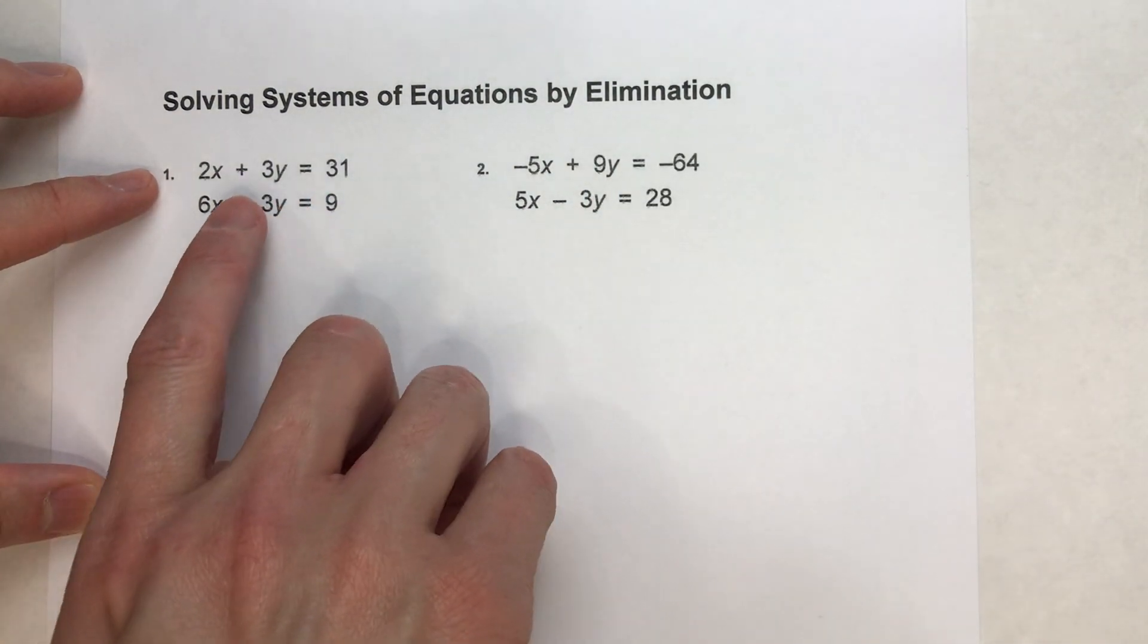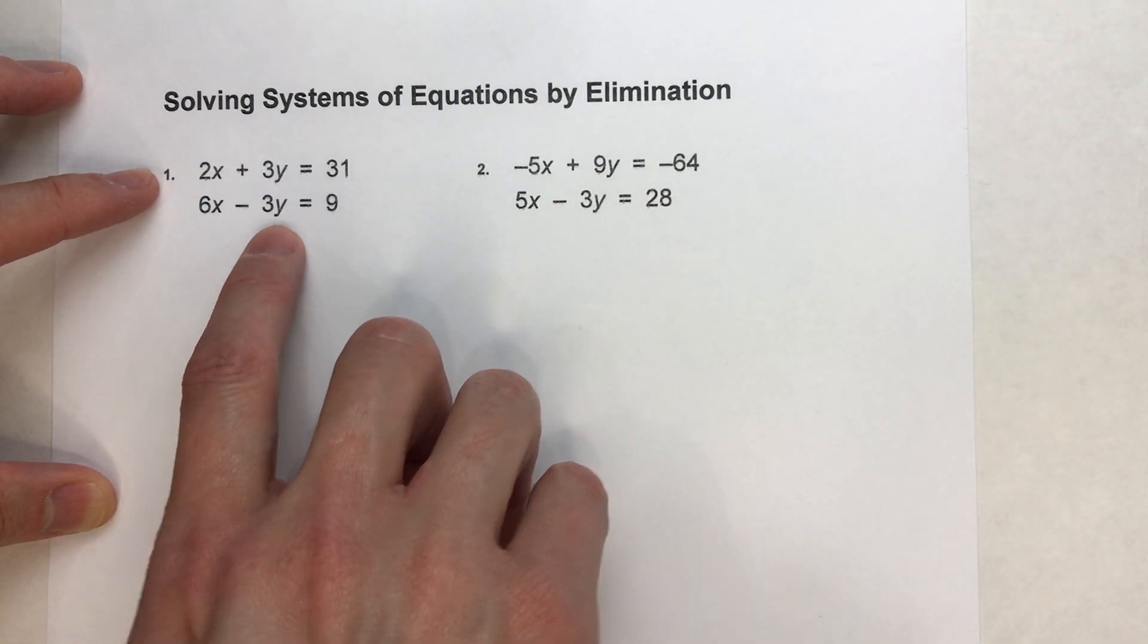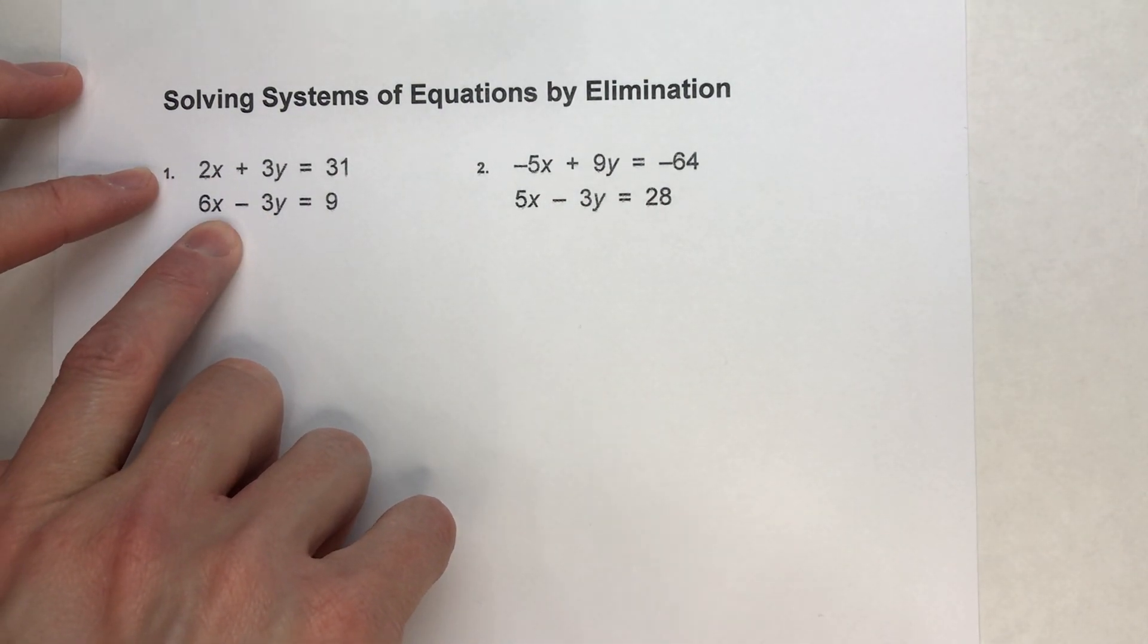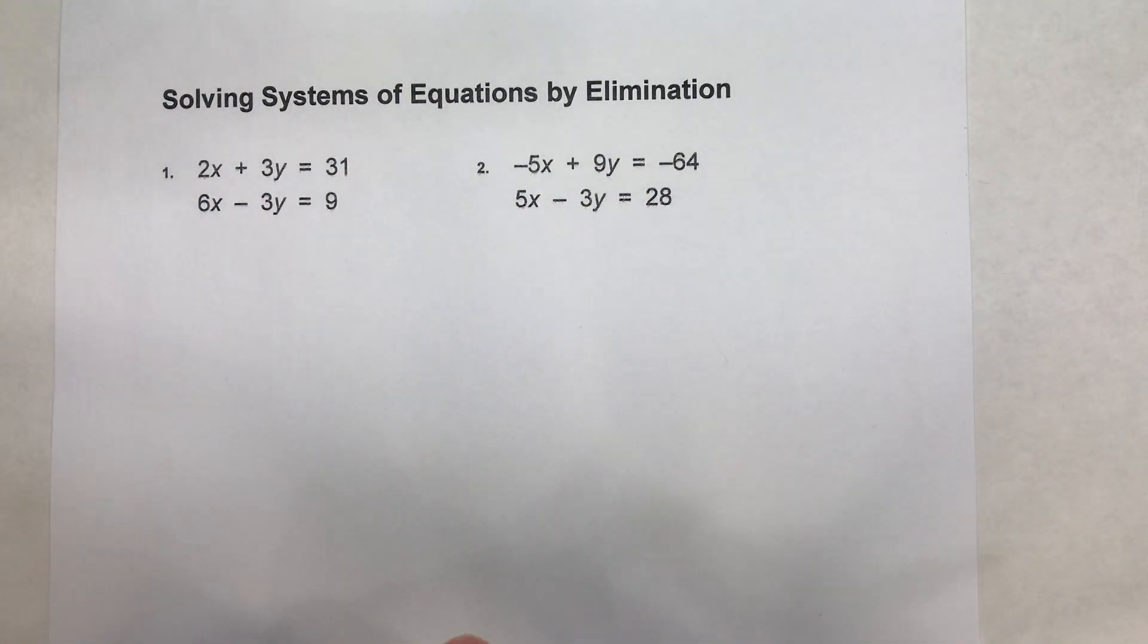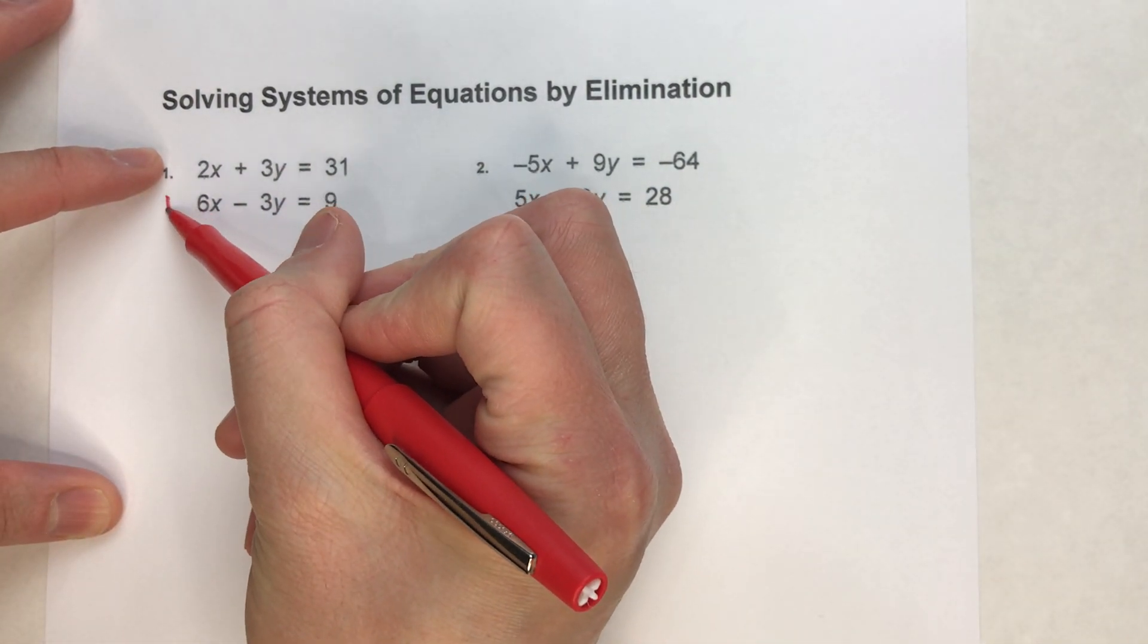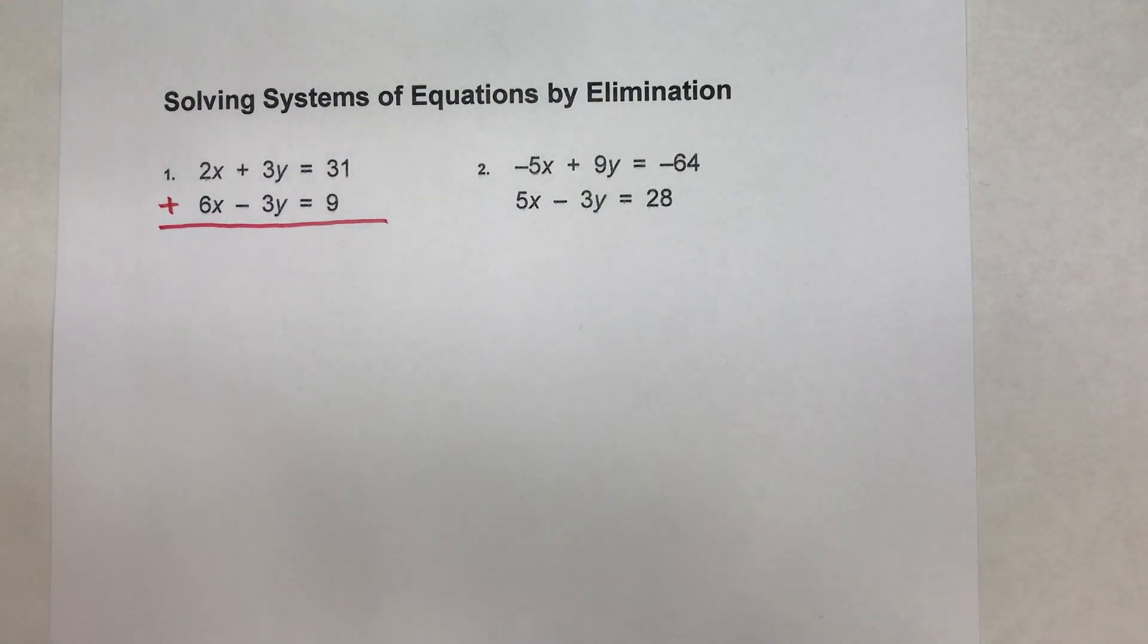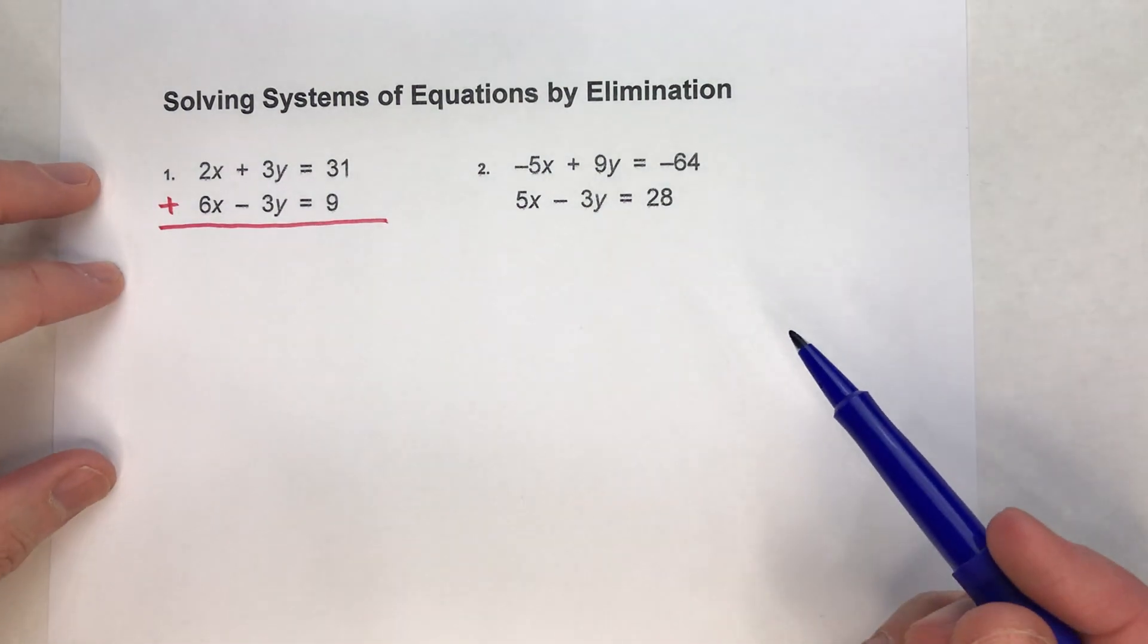By having the same number in front of one of the variables, but one positive and one negative, we can do something called the elimination method, where we can add the two equations together. There's a reason why we're going to add them together.